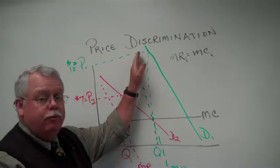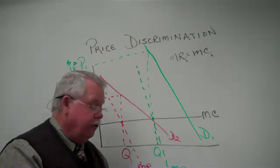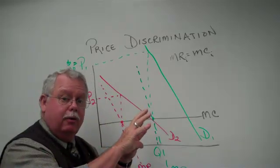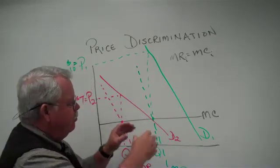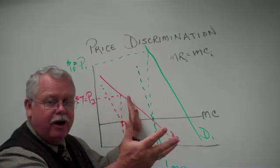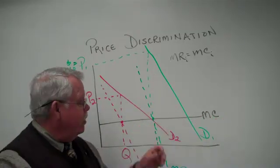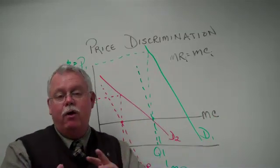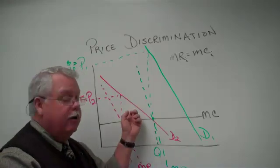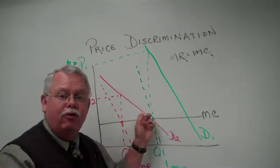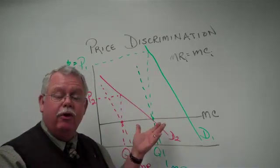What we've done is charge two different prices in two different markets. There are three things that must be in place to successfully do this. First, we've got to be able to identify the markets — know who they are and recognize them. That's easy if you're comparing evening and afternoon shows. Second, we've got to be able to segregate them from one another. For example, you can't buy a student-discount ticket without a student ID. Third, we've got to make sure they can't sell back and forth between the two markets — what we call arbitrage — so someone can't buy a $7 ticket and resell it to someone for the $10 show. We might color the tickets differently to prevent that.